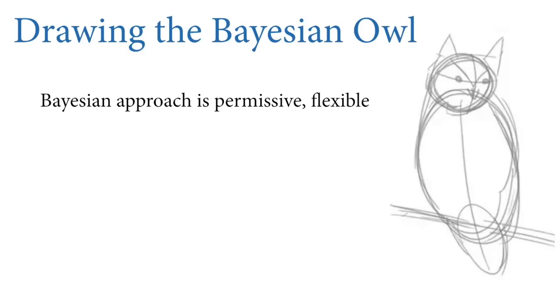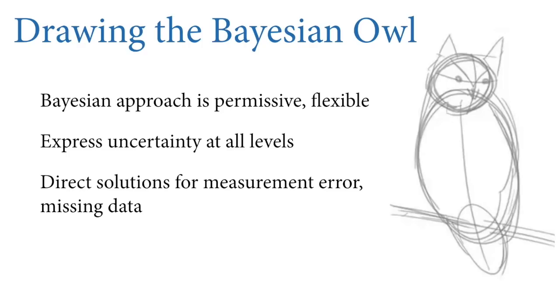The Bayesian approach is permissive and flexible. No matter if you've got a data-generating scientific hypothesis, you can analyze it with Bayes. It doesn't matter if the uncertainty is due to sampling variation or to some other process like light scattering in a bad telescope. You can express uncertainty at all levels, whether it's measurement, observation, sampling biases, or missing data. All those different sources of uncertainty live together in the same analysis. Near the end of the course, I'll show you how to use the Bayesian approach to get rather direct solutions to measurement error and missing data.